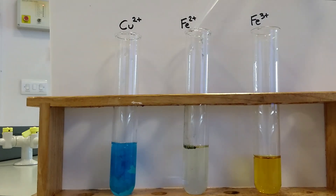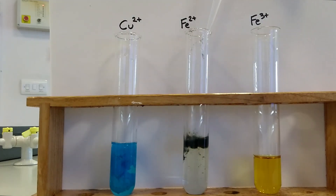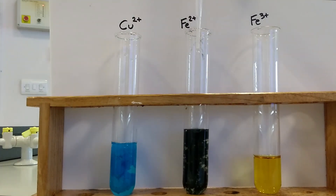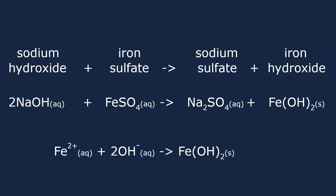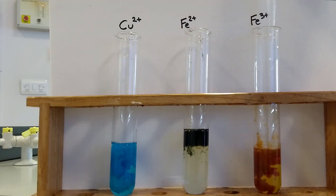The green precipitate forms due to the reaction between the aqueous Fe²⁺ and 2 hydroxide ions to form the insoluble solid iron(II) hydroxide. When sodium hydroxide solution is added to iron(III) chloride, an orange-brown precipitate forms.